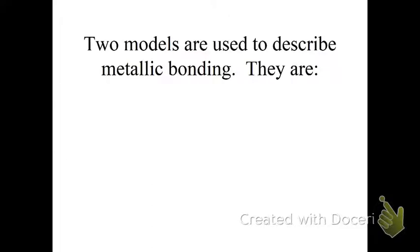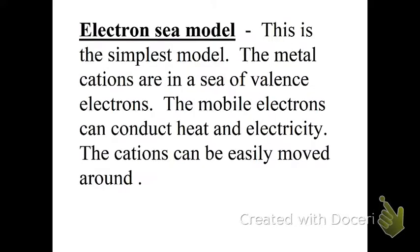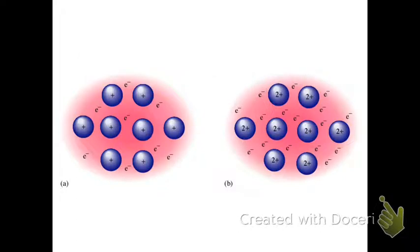Two models are used to describe metallic bonding: the electron sea model, which is the one we're most familiar with, and that is the simplest model. That is the metal cations and a sea of valence electrons. They can conduct heat and electricity, and the cations can be moved around easily. That's where we get those classic metallic properties like malleability and ductile and electrical conductivity.